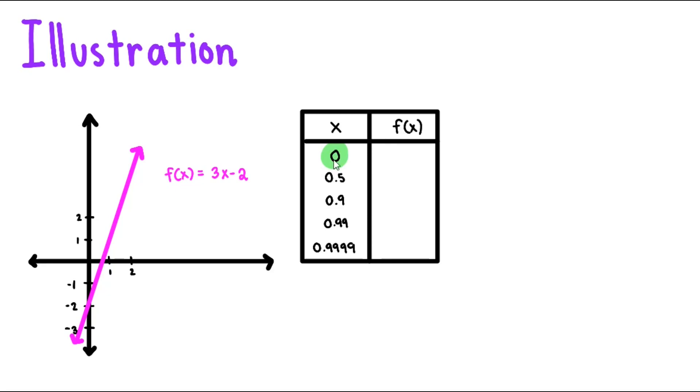At x equals 0, what we do is we just plug in x equals 0 in f of x. We have f of 0 equals 3 times 0 minus 2 which is negative 2. Similarly, at x equals 0.5, we'll obtain negative 0.5. We then continue the same idea to complete the table.